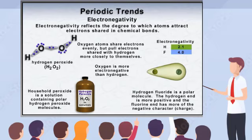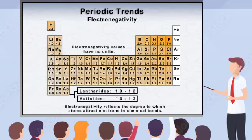A molecule with more of a charge on one end than the other is known as a polar molecule, and this polarity greatly affects its properties. Polarity won't be covered in this program, but you can learn more about it in a chemistry textbook or the CyberEd program Molecular Shape and Intermolecular Forces. Notice from the chart on your screen that electronegativity values have no units. Electronegativity values are arbitrary units based on a variety of factors, but are often considered to be a rough average between electron affinities and ionization energies.